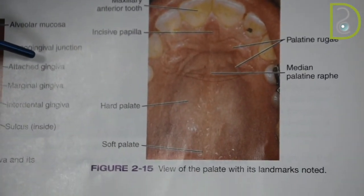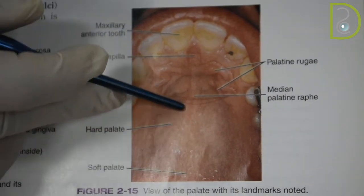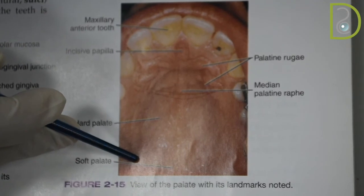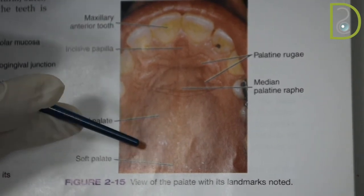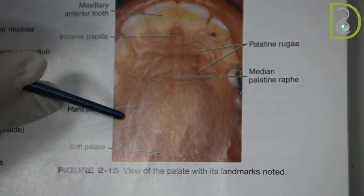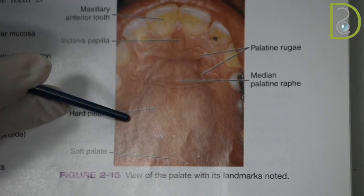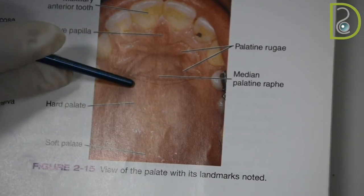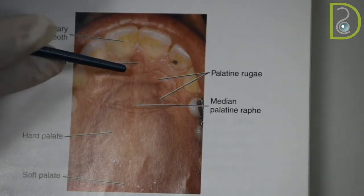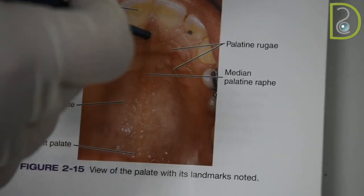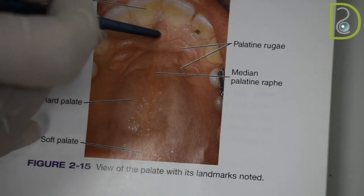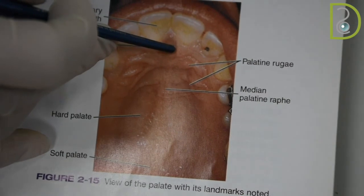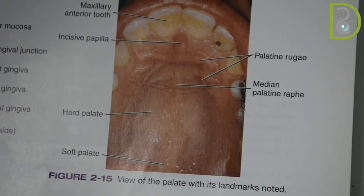The blood supply of the hard palate: the entire hard palate is supplied by the greater palatine artery and veins, which are branches of the maxillary artery coming from the pterygopalatine fossa. The artery supplies the whole hard palate, then moves into the incisive foramen and rises up toward the nasal cavity, where it supplies a small area of the mucous membrane within the nasal cavity.